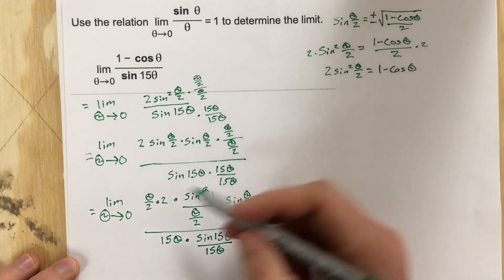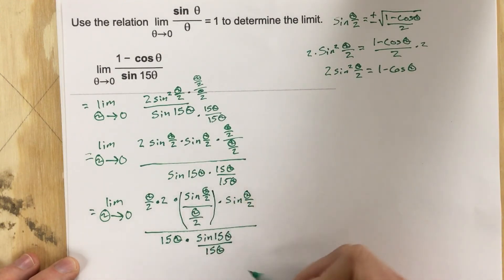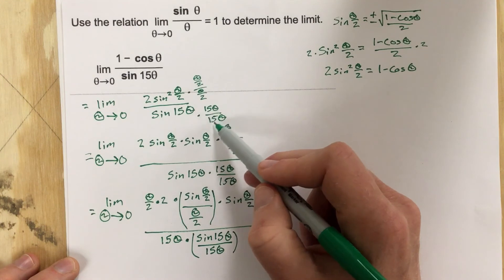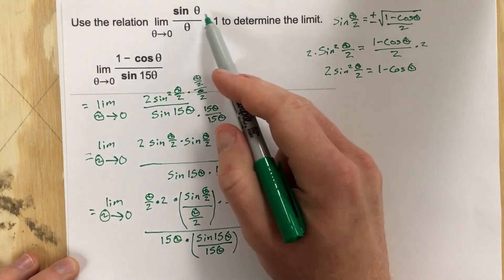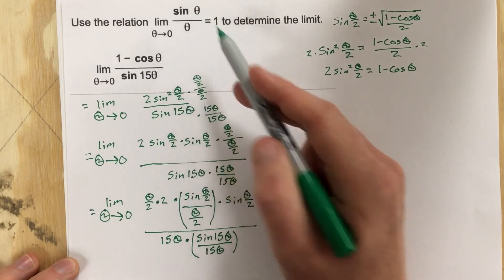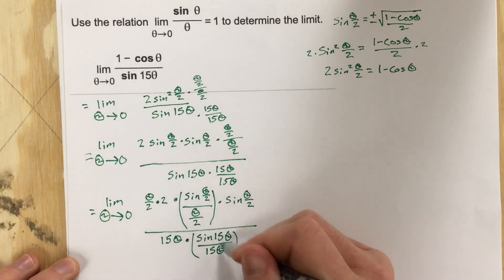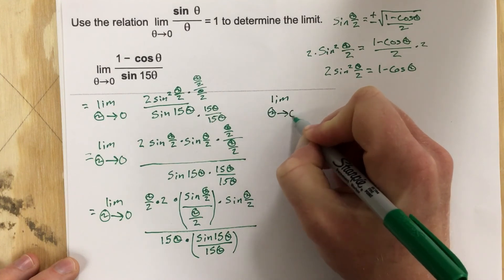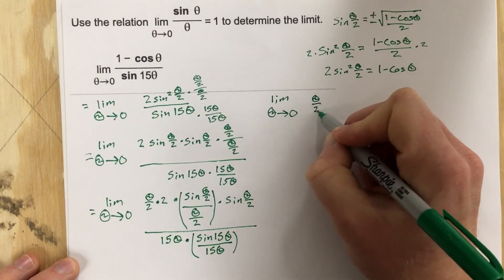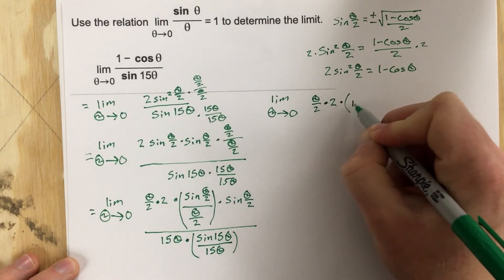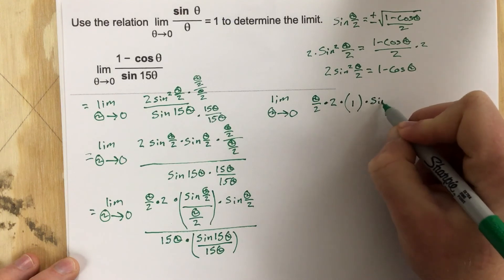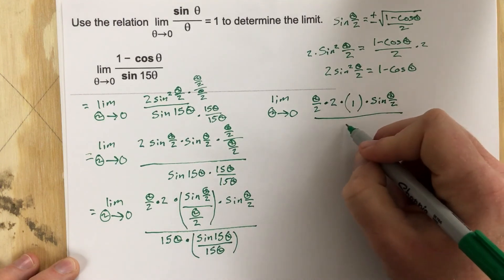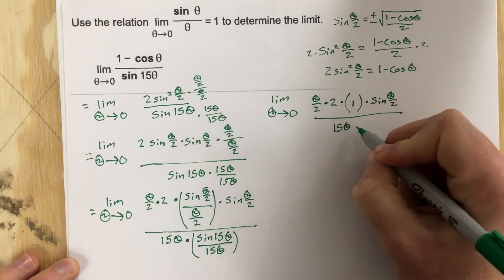This portion — sine theta over 2 over theta over 2 — is essentially sine theta over theta in form. By multiplying by theta over 2 over theta over 2 and 15 theta over 15 theta, we've set up the relation sine theta over theta equals 1. We can replace sine theta over 2 over theta over 2 with 1, and sine 15 theta over 15 theta with 1. So the limit as theta approaches 0 gives us theta over 2 times 2 times 1 times sine theta over 2, all over 15 theta times 1.